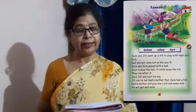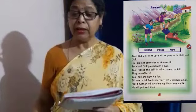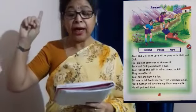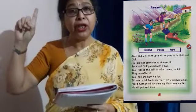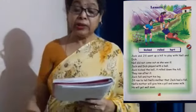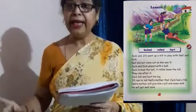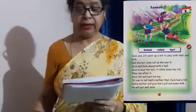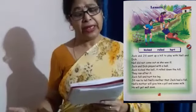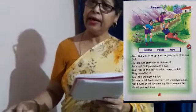Jack and Jill — Jack is a boy, Jill is a girl. Went up a hill. Jack and Jill kahaan gaye hain? Pahaad ke upar gaye hain. To play with Nell and Dick — khelne gaye hain Nell aur Dick ke saath. Nell bhi is a girl and Dick is a boy.